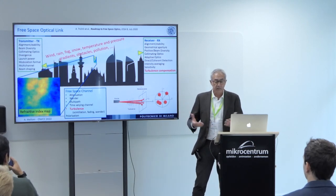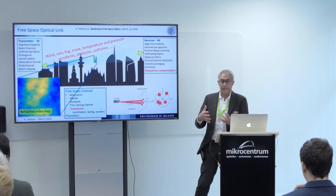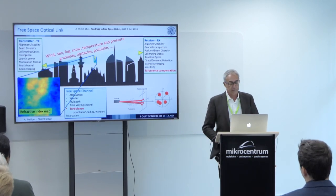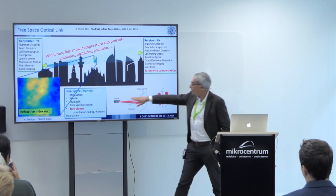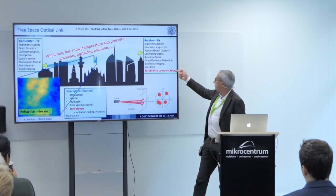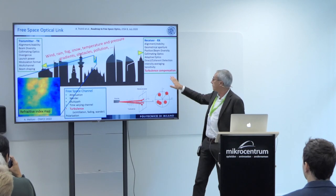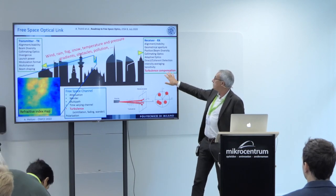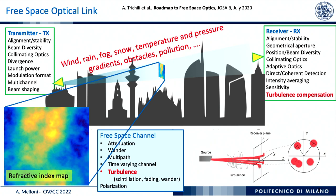You typically transmit a very nice Gaussian beam, but what arrives is something that is strongly distorted. These two red terms are the main topic of this talk — in particular, a way to try to compensate the turbulence effect on the received beam.